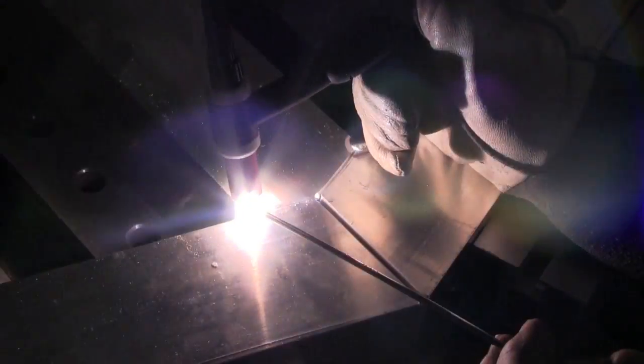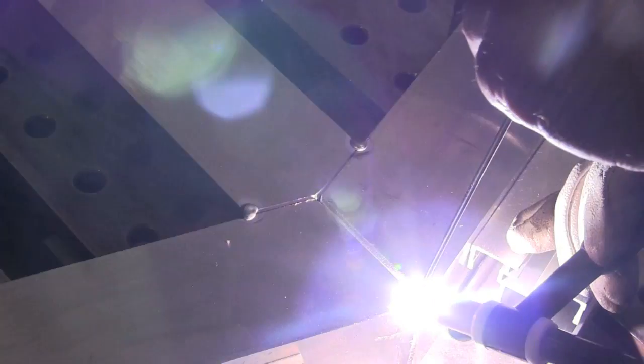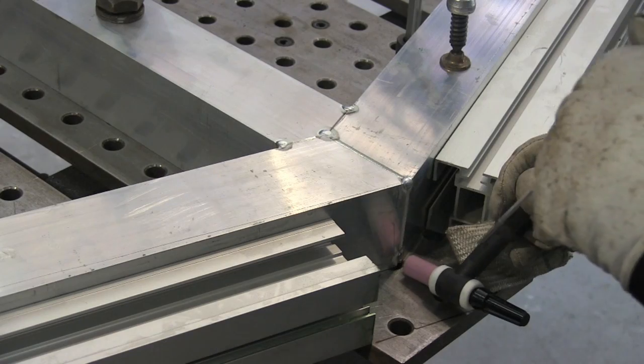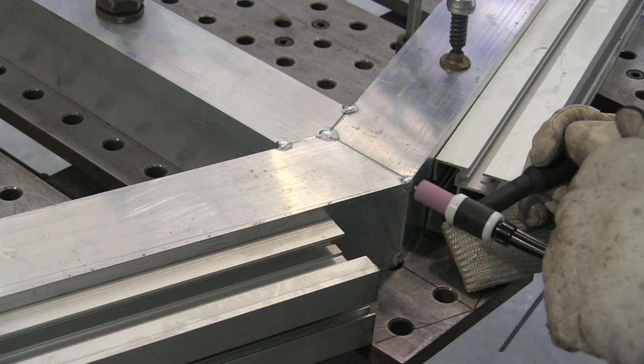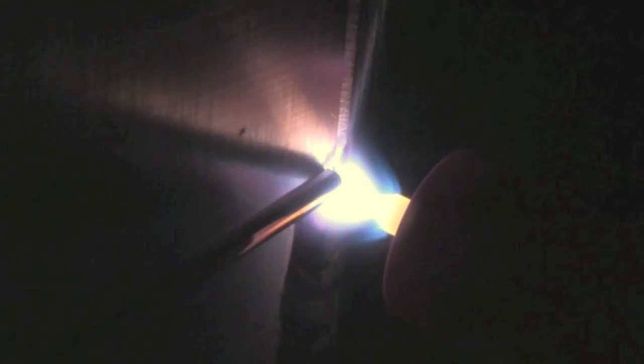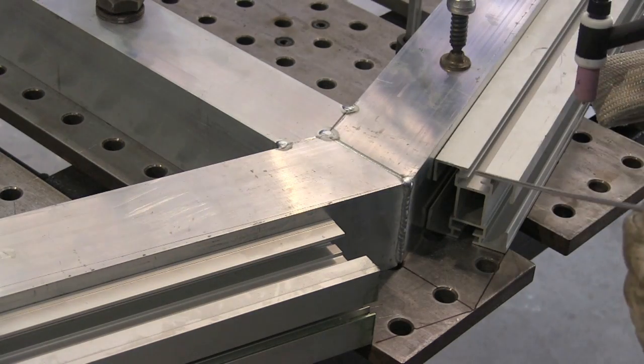It's all clamped down, not going to move. A few tack welds and then we'll weld what we can here in place. You can see I'm feeding the filler wire from the side here. That's mainly because we've got a camera in between me and the weld. That's also my excuse for shaking around like I'm doing.